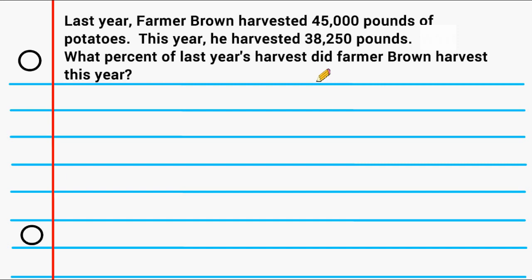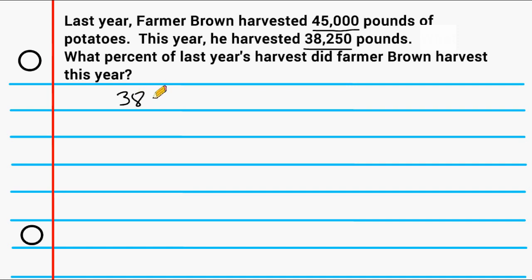The problem states that Farmer Brown harvested 45,000 pounds of potatoes last year, and this year he harvested 38,250 pounds. We have to determine what percent of last year's harvest did he harvest this year. So 38,250 can be represented as part of 45,000, and we want to express what part that is as a percentage — by expressing 38,250 over 45,000 as a fraction.